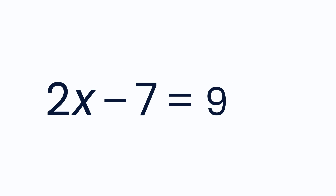Let's look at a final example: 2x minus 7 equals 9 plus x. Here you can see that there are unknown quantities on both sides of the equal sign. You still want to isolate the x, so you need to group all terms containing x on one side and the numbers on the other.